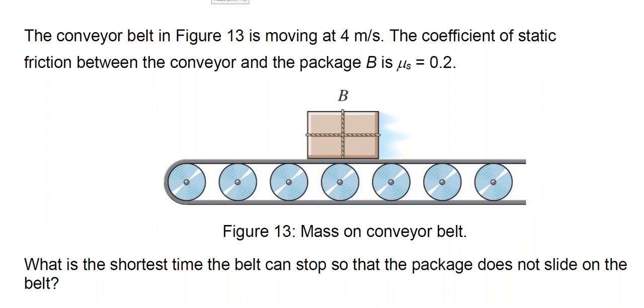Hi everyone. The conveyor belt shown in the figure is moving at 4 meters per second. The coefficient of static friction between the conveyor and the package B is μs = 0.2. What is the shortest time the belt can stop so that the package does not slide on the belt?